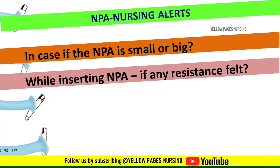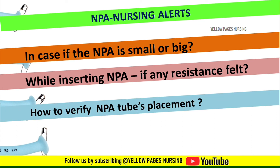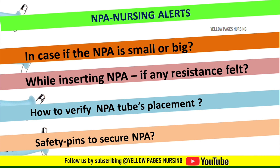While inserting the nasopharyngeal airway, if any resistance is felt, try rotating the airway slightly and re-advance it. If the tube still will not pass, try inserting it into the other nostril. After insertion, verify tube placement by looking for chest movement, listening for breath sounds, and feeling for air movement over the tube's flange. Safety pins at the flanged end can prevent the tube from being lost into the oropharynx, though this is very rarely used.